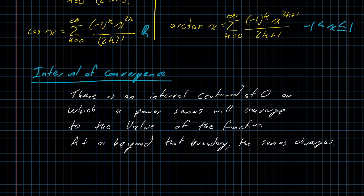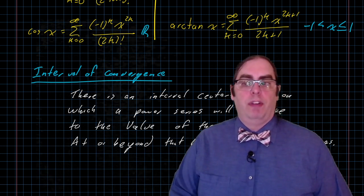At or beyond that boundary, the series diverges. So, I want to talk about that statement a little bit more carefully. There is a boundary point at which the function will no longer converge. The power series becomes a divergent series. If you go beyond that point, you may reach a circumstance where the series will converge again. But there is no longer any guarantee that it will converge to the function you care about.